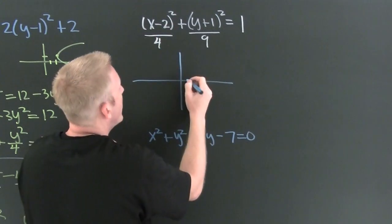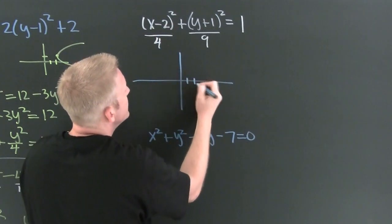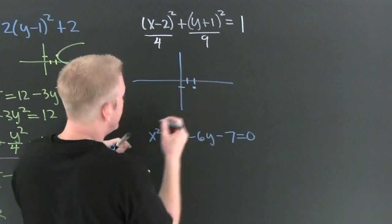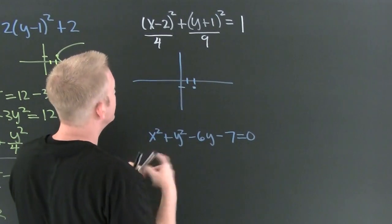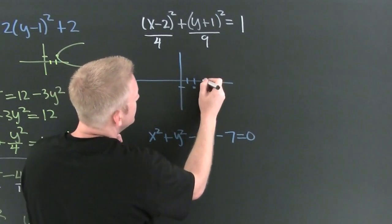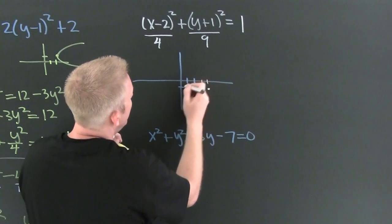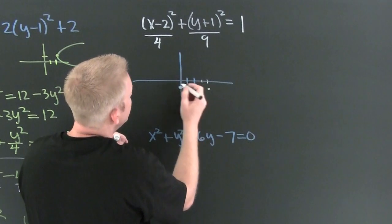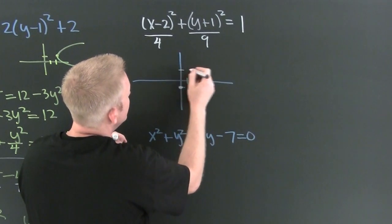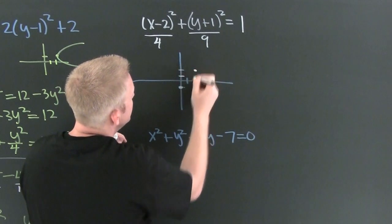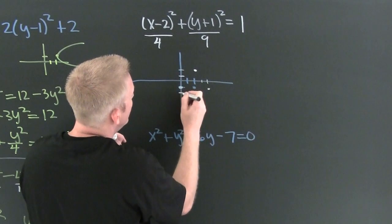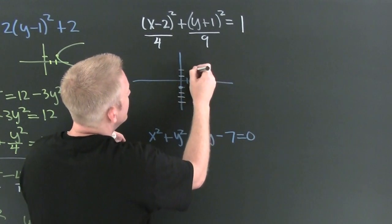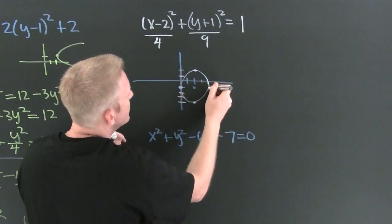To the right 1, 2 — and up, then down 1. There's your center. From that center, you need to go right 1, 2 — and left 2. Then you need to go up 3 — 1, 2, 3 — and down 3 — 1, 2, 3. From that point. And there's your ellipse.